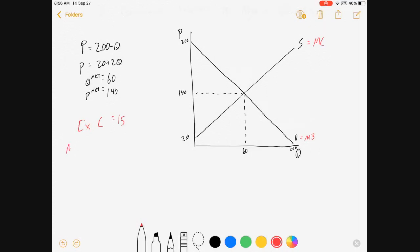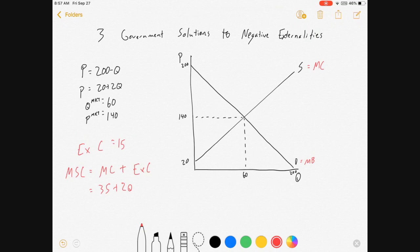So we're going to create a new function called the marginal social cost function, and it's going to be equal to the market marginal cost plus the external cost. So that means it's going to be equal to 35 plus 2Q. I just added 15 to my inverse supply curve right there.